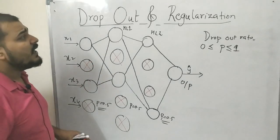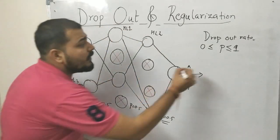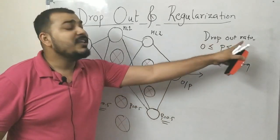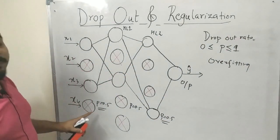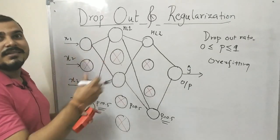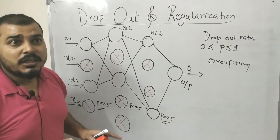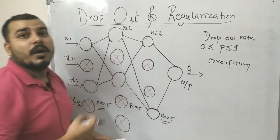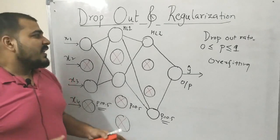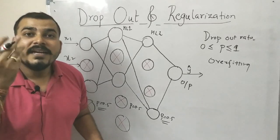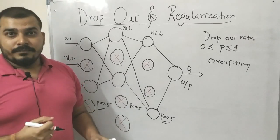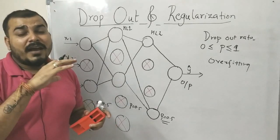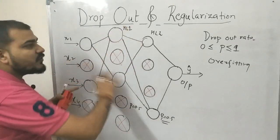So instead of using regularization like L1 and L2 to improve the overfitting problem, you use the dropout ratio. In each dropout pass, you are deactivating some neurons and activating others, deactivating some input features and activating others. The next question is: if training data uses dropout by deactivating and activating neurons, what about test data?